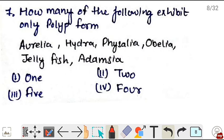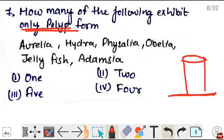Next, how many of the following exhibit only polyp form? Polyp, that is cylindrical structures which are sessile, attached to substratum. Among these examples, only Hydra and Adamsia are examples which exhibit only polyp form. They don't form medusa. So correct is option 2.